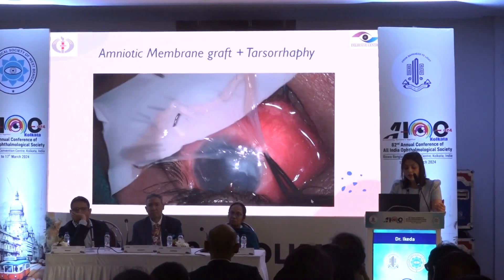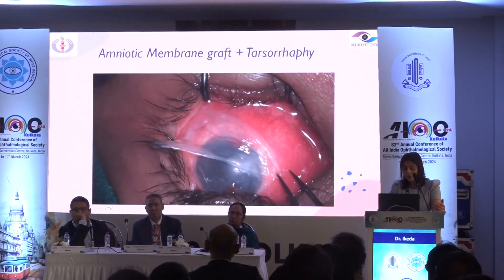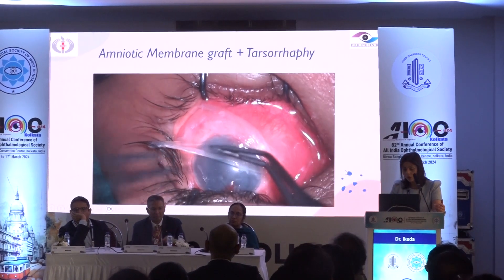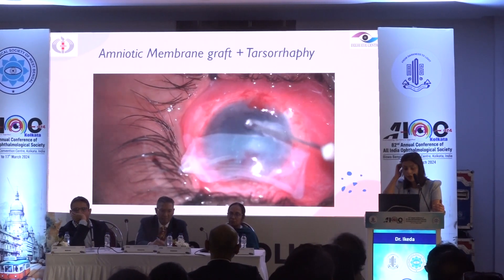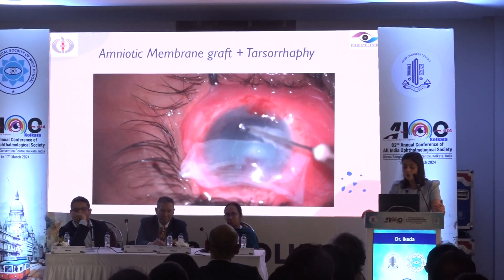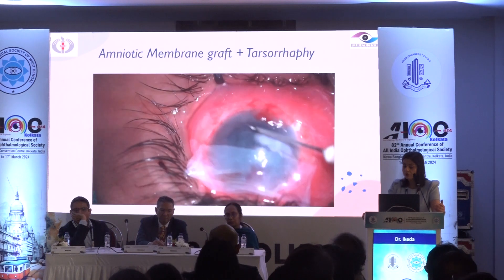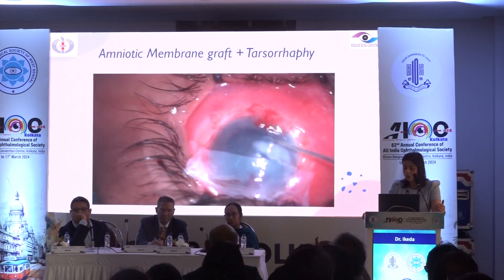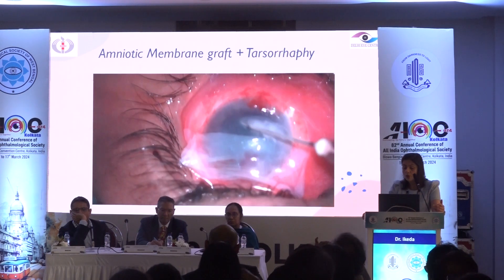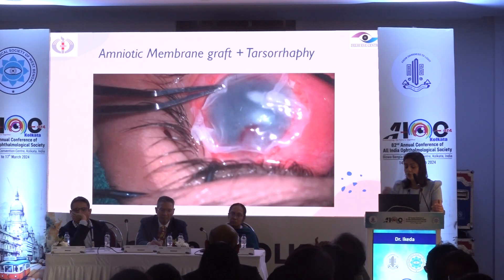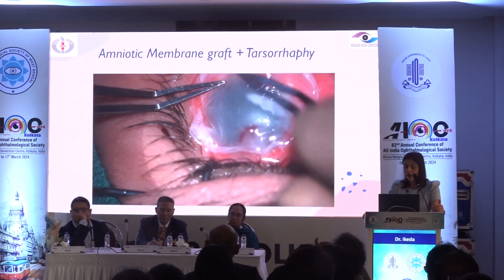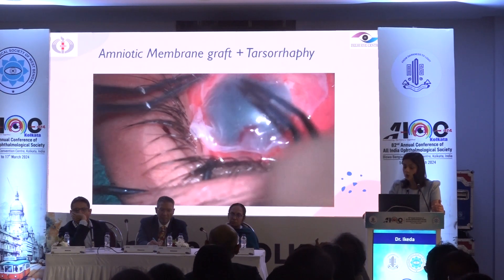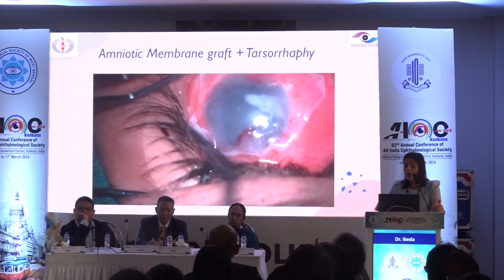For the amniotic membrane graft technique, we cover the ocular surface and use fibrin glue loaded in two different syringes, which makes application easier. We deflect both surfaces of the amniotic membrane graft, iron the glue out, and secure it in position.